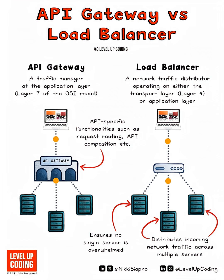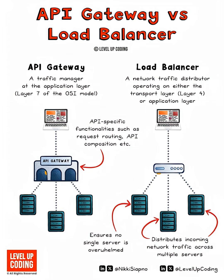This video compares API Gateway versus Load Balancer in modern application architecture. API Gateway operates at Layer 7, the Application Layer, of the OSI model.